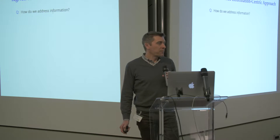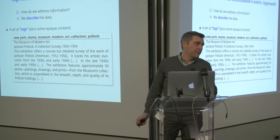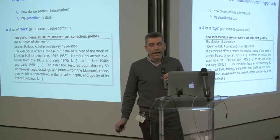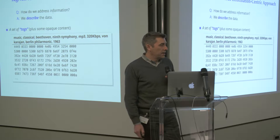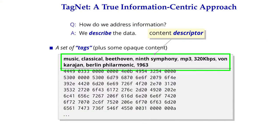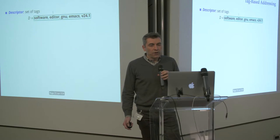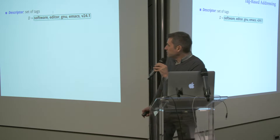Instead, we propose bags of words — we propose to describe data with tag sets. This might be an announcement for an exhibit at the New York Museum of Modern Art, defined by the tags highlighted in boldface. This is a similar chunk of data — it might be a block of data within a stream — described by the set of tags at the top. We call that set of tags a descriptor. A descriptor is simply a way to describe data from the viewpoint of the application.